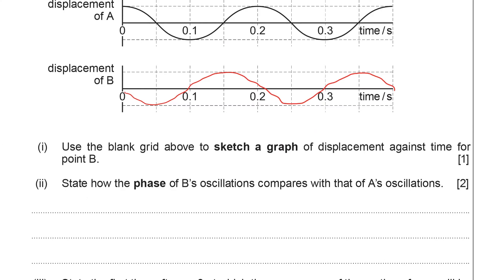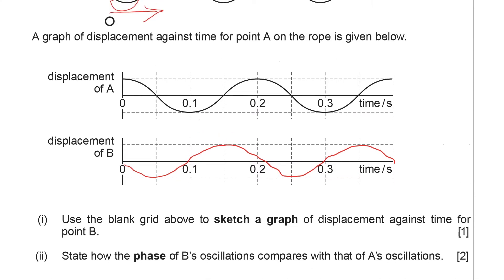Next we've got to say how the phase of B's oscillations compares with those of A's oscillations. The phasor diagram that we've seen in a previous video can be helpful here. So we've got four spokes. Remember that the phasor diagram rotates anticlockwise. Spoke 2 corresponds to A because A is at a peak. B will correspond to spoke 3 because B is in the equilibrium position and just about to go down. So you can see that B leads A by 90 degrees. Alternatively, you could say that A leads B by 270 degrees.